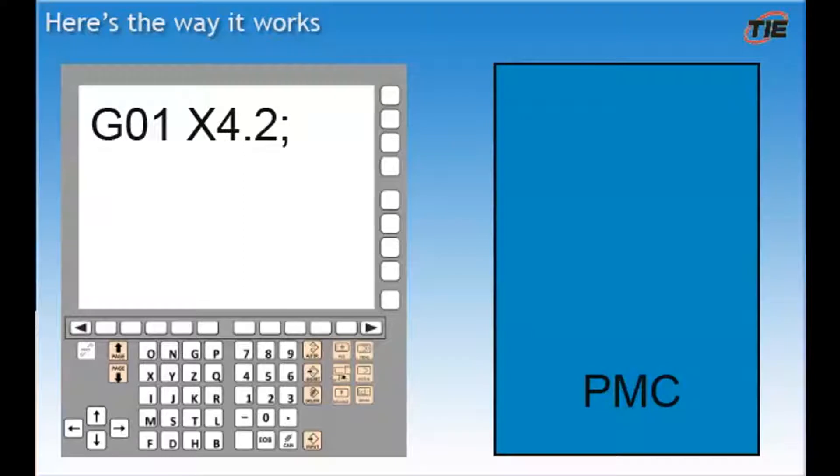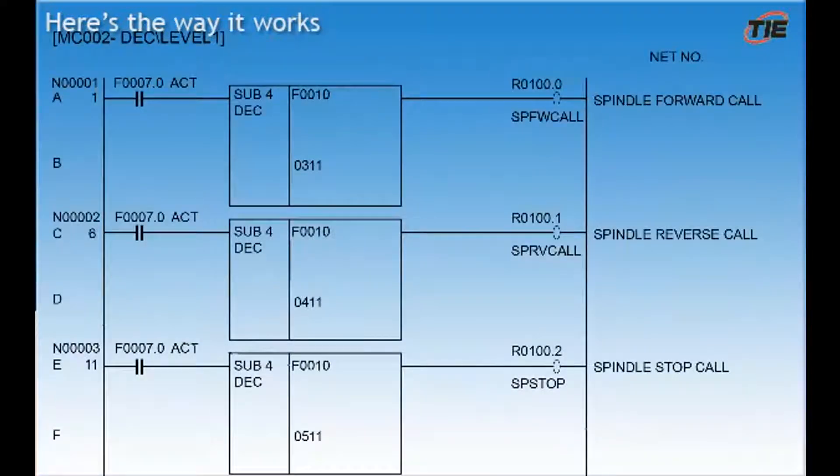Now for the details. M codes, for the most part, are controlled by the PMC. To get a good grasp on how this works in the ladder, you need to have a grasp of the F and G addresses that are used inside the ladder logic.